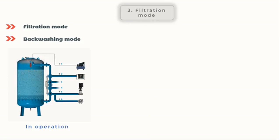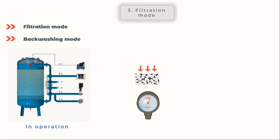The two operating modes of a filter are filtration and backwashing. In filtering mode, the tank is filled with raw water and a nozzle plate at the bottom ensures that the treated water flows uniformly through the filter material before reaching the customer. When the filter becomes clogged, resulting in an increase in head loss across the filter or an excessive rise in turbidity in the filtered water, backwash mode is activated.